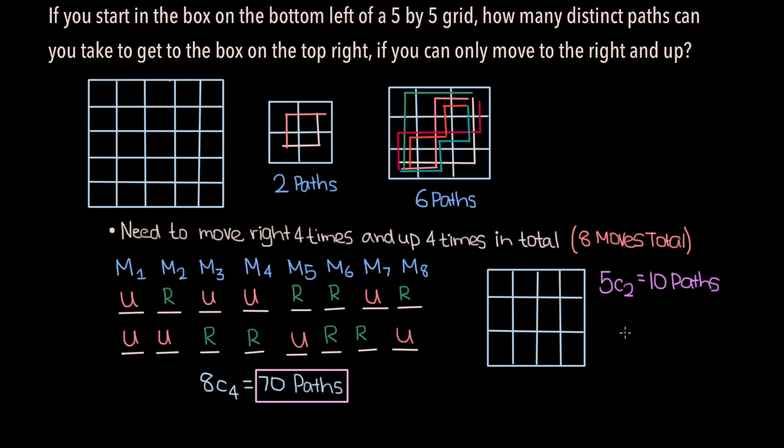But now you might be wondering why we're giving special preference to the 2 upward moves. What if, instead, we chose where the 3 moves to the right are going to be first? The answer in this case is 5 choose 3, which is also 10. And so ultimately, it doesn't matter whether you pick the moves up or moves to the right first. The answer will always be the same.